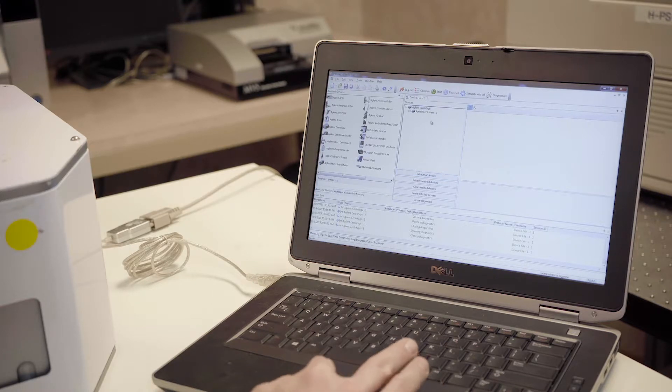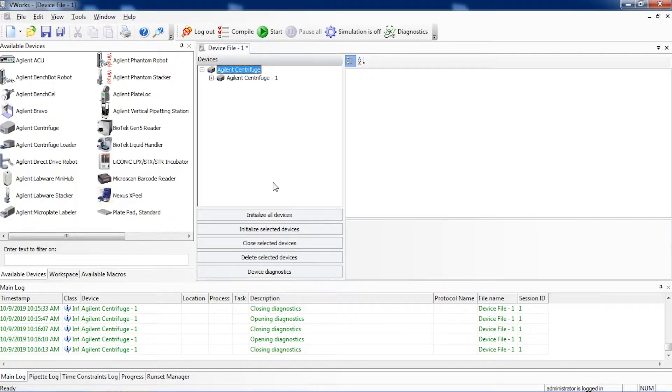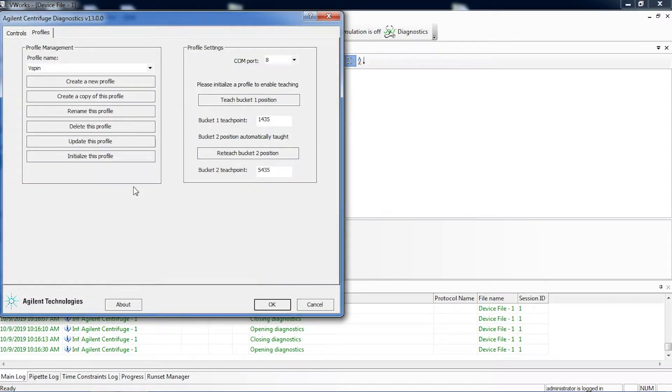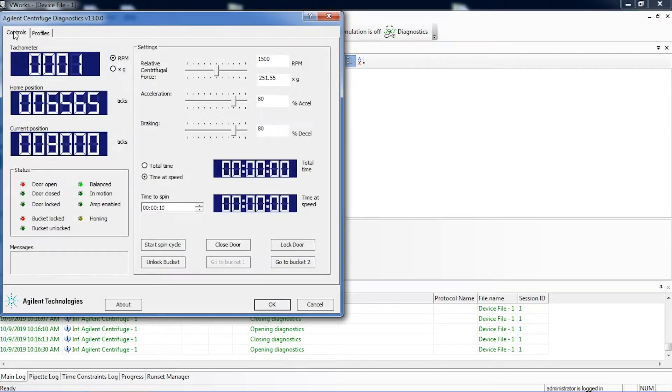From within V-Works, select your Agilent centrifuge, go to device diagnostics, first initialize the profile, then go to controls.